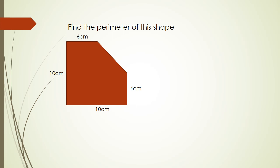This next problem asks you to find the perimeter of a shape. To find the perimeter you start from one corner and measure all the distances around. The problem is we don't have one of the distances, so we need to figure it out by creating a right angle triangle. Looking at the base: one part is 10 centimeters and another part is 6 centimeters, so the remaining light blue part is 4 centimeters.